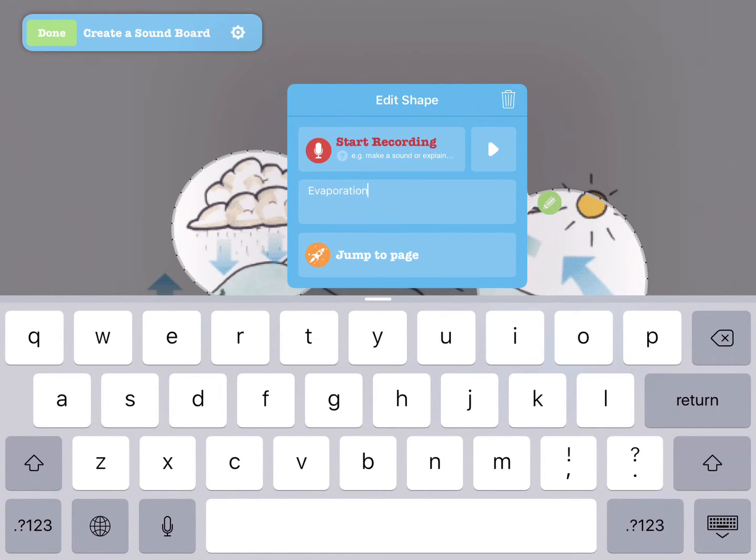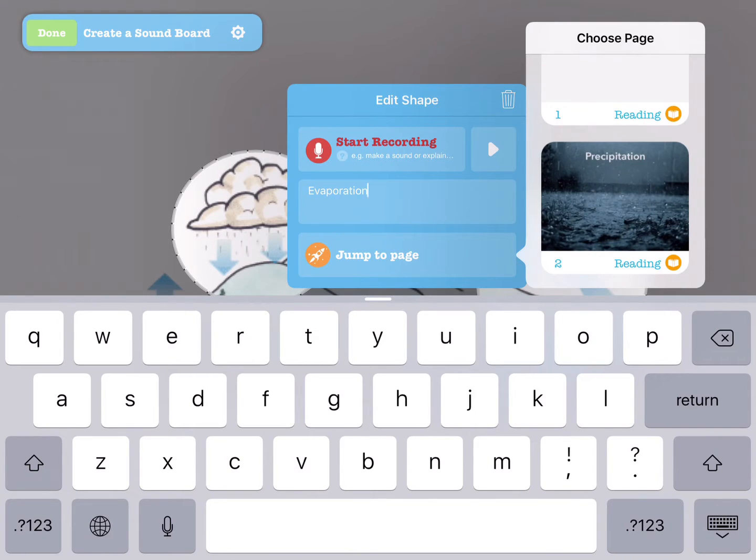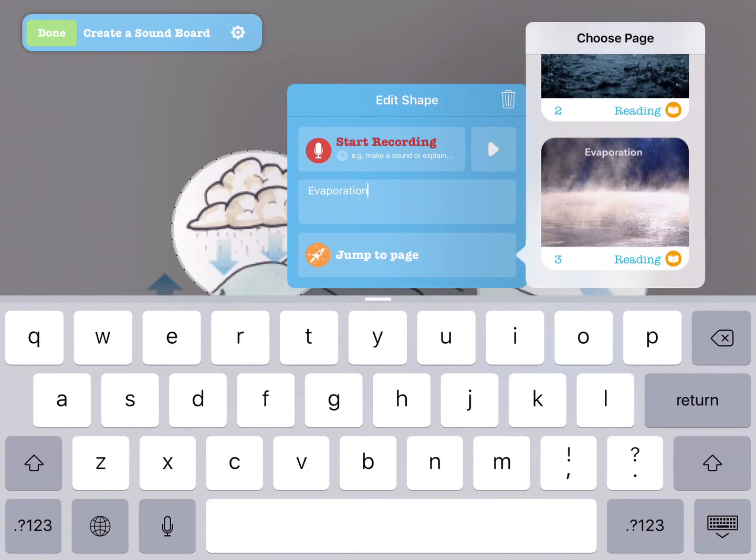Use the jump feature if you want to turn your soundboard into a menu or table of contents. Each hotspot can lead to a new page, letting your player dive deeper into the exact part of the lesson that interests them most.